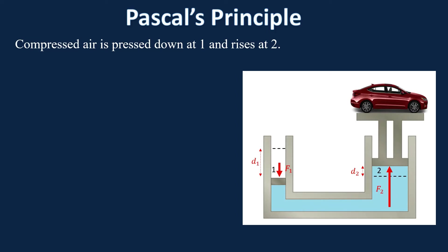In both cases, you're moving air a distance of d1 at piston one and d2 at piston two, while applying different forces. You're applying a smaller force at piston one than at piston two — that's why you use these systems to apply a small force and create a big force. So F1 d1 equals F2 d2, which is basically conservation of energy.